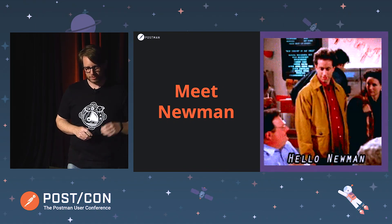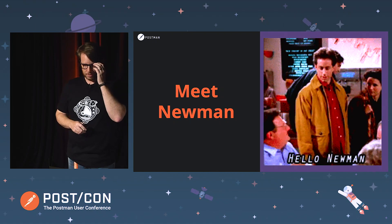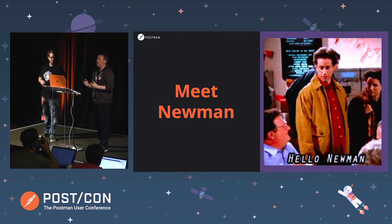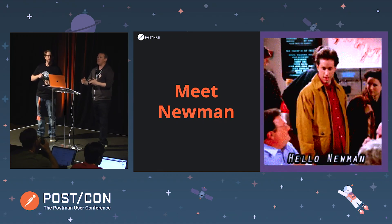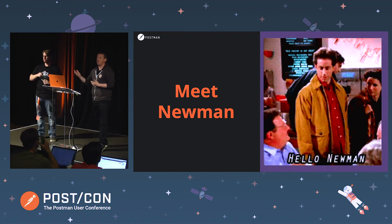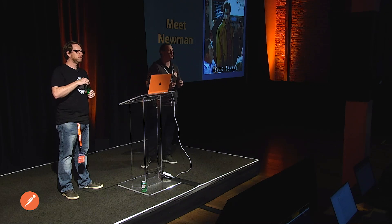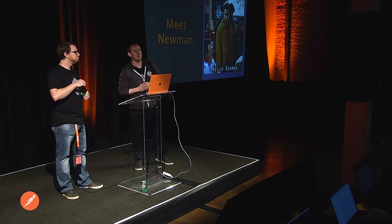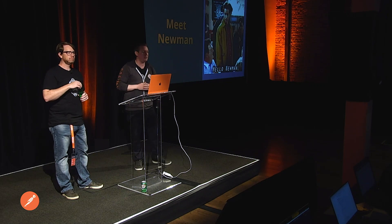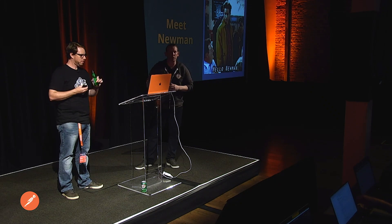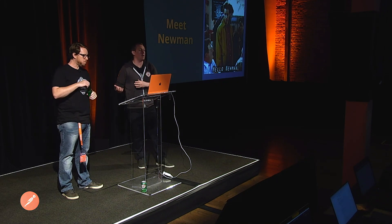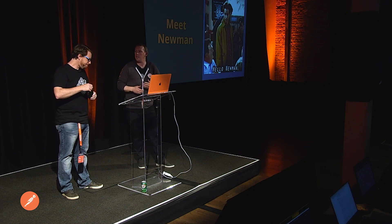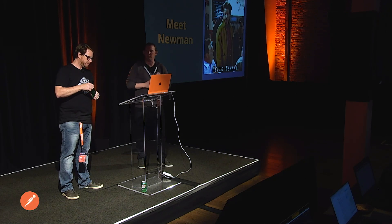That was super basic - we just wanted to show how the Collection Runner works and what information you can gather from it. Now we're going to jump into Newman. You've seen the collection run through the UI runner, but we want to introduce you to Newman. Show of hands - who knows what Newman is or has heard of Newman? Newman essentially is the way to run your collections from the command line and introduce this into CI/CD systems.